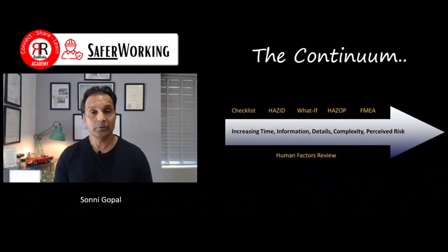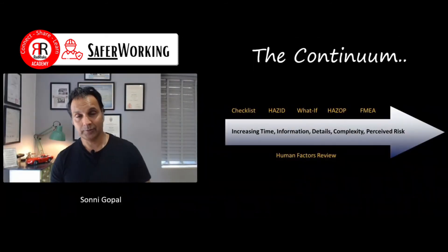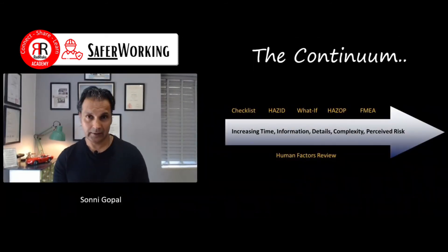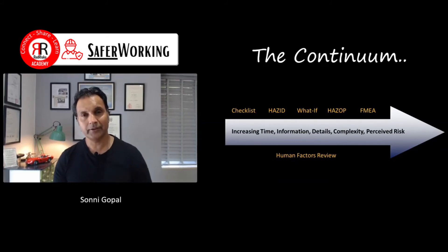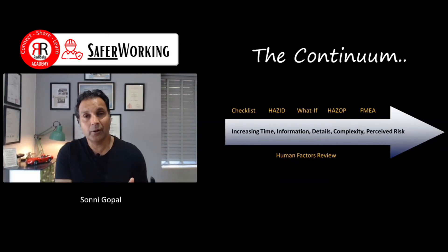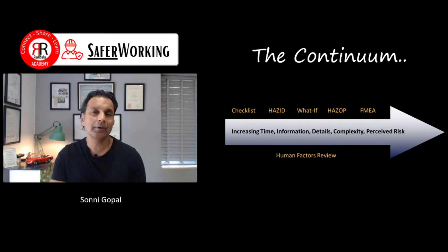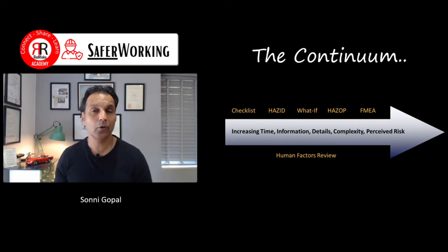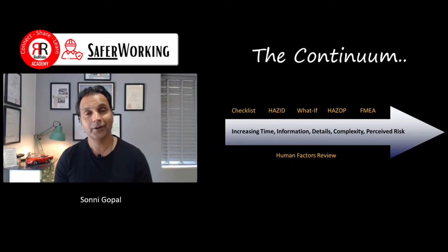In the continuum for risk assessment, you can see how it fits in terms of increasing time, information, details, complexity, and perceived risk. You can start with simple checklists, and it goes all the way through to complex methods like FMEAs or QRAs — quantitative risk assessments.